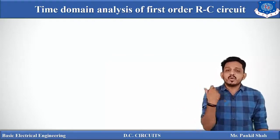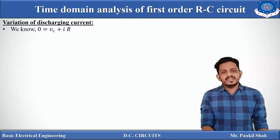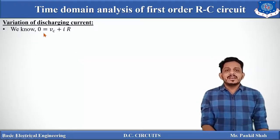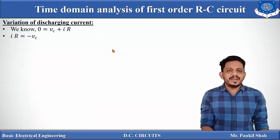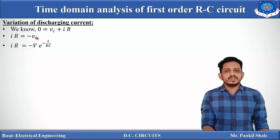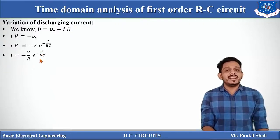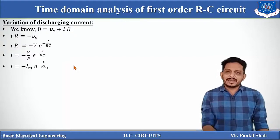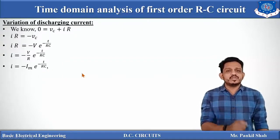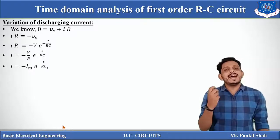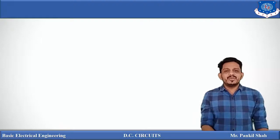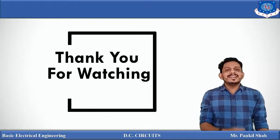The time constant for discharging voltage is defined as the time required for the discharging voltage to decrease from maximum to 36% of its total value. To find the discharging current, from KVL: 0 = Vc + IR, so IR = −Vc. Substituting Vc = V·e^(−t/RC): IR = −V·e^(−t/RC), giving I = −(V/R)·e^(−t/RC) = −Im·e^(−t/RC). The discharging current equation is similar to the charging current equation, but the negative sign indicates that the discharging current direction is opposite to the charging current direction. In this video, you have seen the charging and discharging of a capacitor. Thanks for watching. Stay tuned.